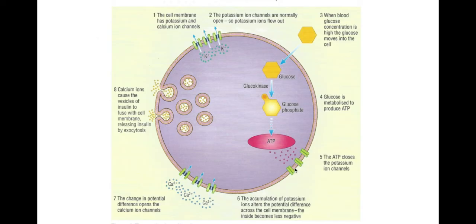Because the potassium channels have closed, the potential difference across the membrane changes — it becomes less negative. As a result of this change in membrane potential, the calcium channels begin to open. Calcium rushes in along its electrochemical gradient, and causes vesicles containing insulin to fuse with the cell surface membrane, releasing insulin by exocytosis.